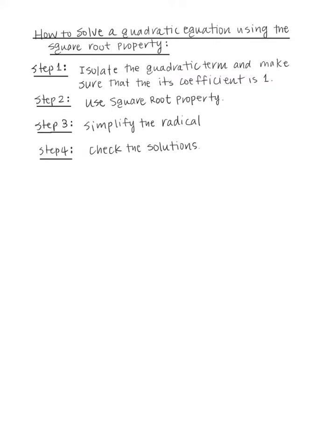Let's go over the steps to solve a quadratic equation using the square root property. Step 1: isolate the quadratic term and make sure its coefficient is 1. Step 2: use the square root property. Step 3: simplify the radical. Step 4: check the solutions. A quadratic equation is an equation of the form ax squared plus bx plus c equals to 0.